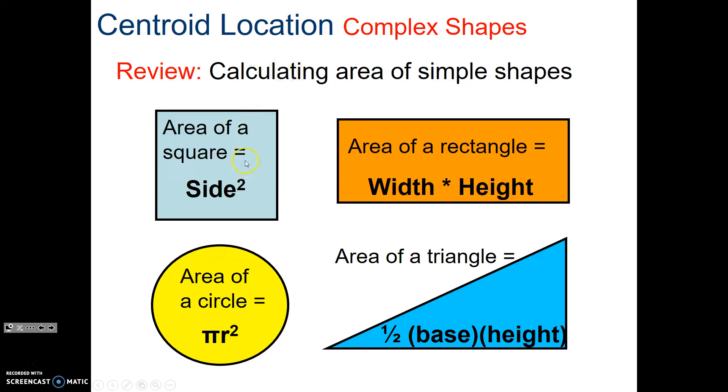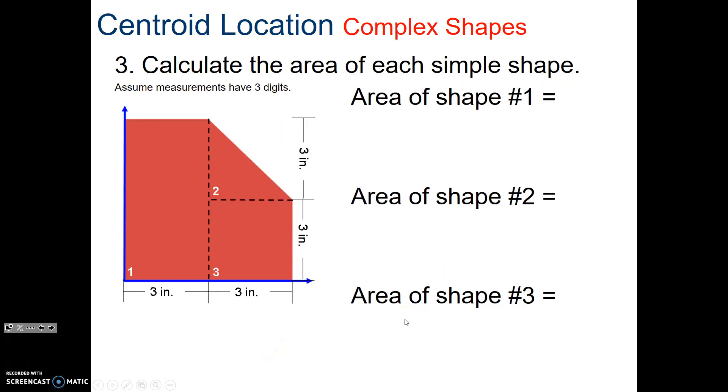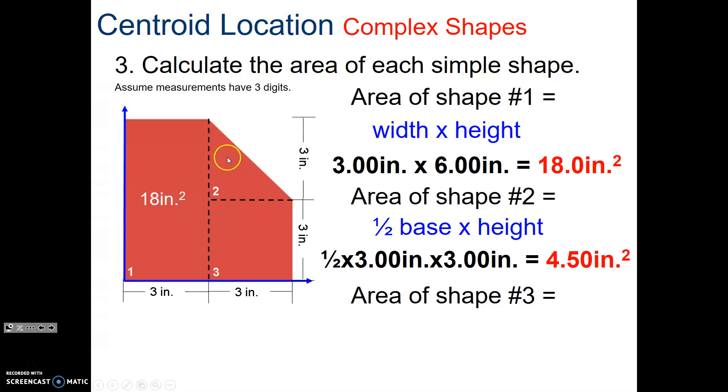Now, we just use our equations to calculate simple shapes. Areas, so squares is just the square, the size. Rectangles, length times height. Circles, it's pi r squared. Triangles, one half base times height. We're going to get the areas of each shape. We take the base of this times its height. So 3 times 6 is 18. Then we take the area of the second shape, our triangle, one half base, 3 times its height, that gives us 4.5. And then lastly, our 3 squared, which is 9.